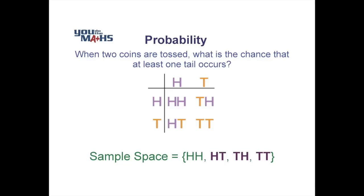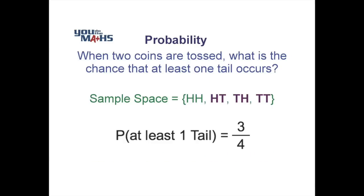So again our sample space here lists two heads, a head and a tail, a tail and a head, and two tails. To answer our question of what is the probability of at least one tail occurring, we can see from our sample space that there are three outcomes where at least one tail occurs — in other words, they are favourable outcomes — out of a total of four. So the probability of at least one tail is three over four.